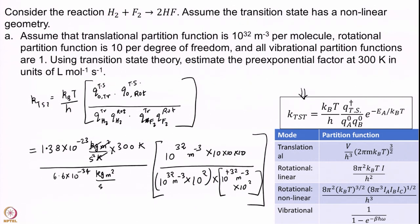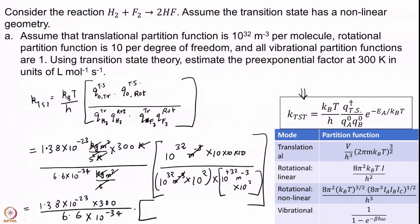Let us make sure the units are correct. We have kg·m²/(K·K·s) over kg·m²·s, which leaves us with m³/s. So I will be left with meter cube per second. Let me now simplify: 1.38 divided by 6.6 — the 10³² in the numerator from the transition state cancels with 10³² in the denominator from H2. I have 10³ in the numerator and 10⁴ in the denominator, leaving 10⁻³³ m³·s⁻¹.